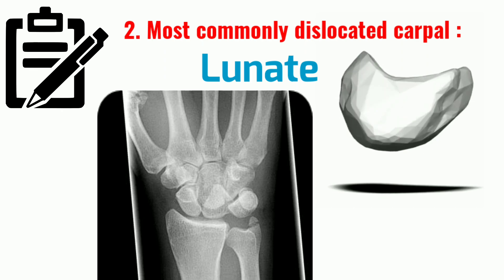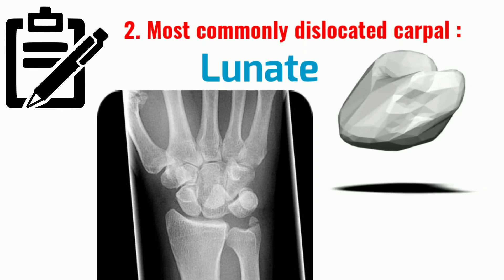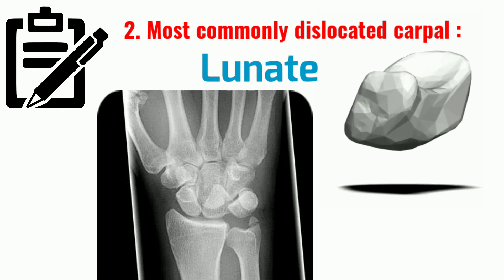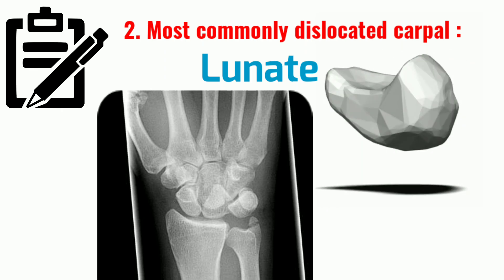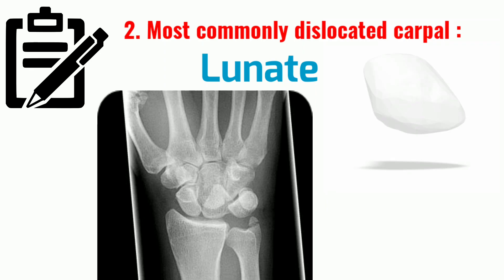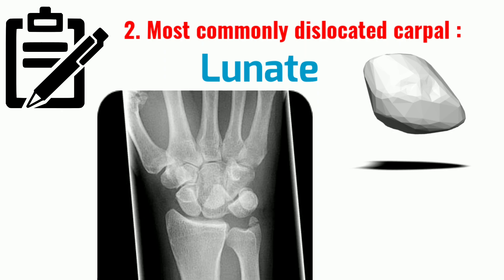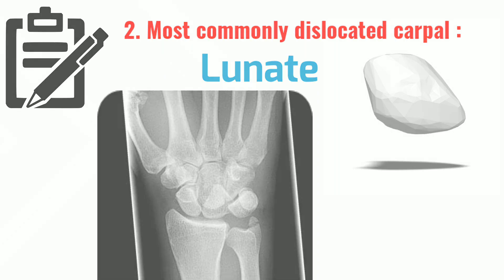In this X-ray, you can very clearly observe the dislocation of the lunate. The lunate looks displaced and rotated volarly, while the rest of the carpal bones are in a normal anatomic position in relation to the radius.